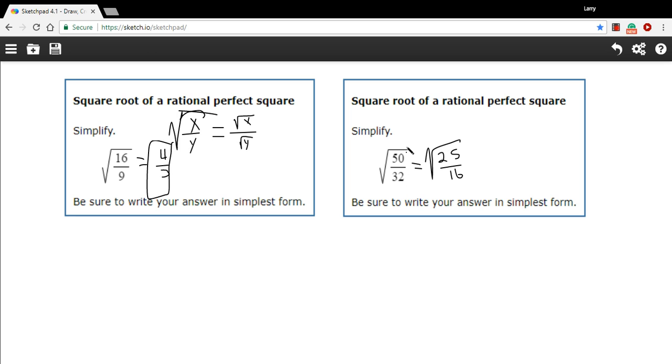So make sure you check whether there's some easy simplification to do before you try to take the square root. Now let's take the square root of the top: the square root of 25 is 5, and the square root of the bottom, square root of 16 is 4.